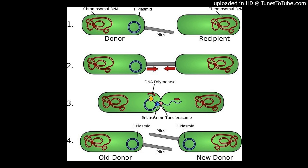We start with conjugation. E. coli uses plasmid navigation — use the F factor to encode the sex pili. Only works with F+, not F-. With sex pili, we can go and form a bridge. As it moves to other bacteria, a switch. Our plasmids resist antibiotics.